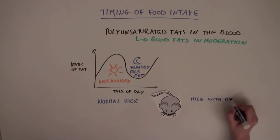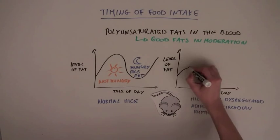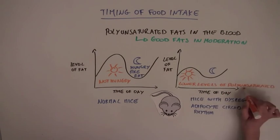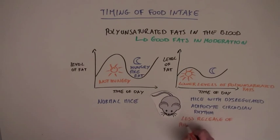The scientists realized that mice with a disrupted adipocyte circadian rhythm had lower blood levels of polyunsaturated fats during the day. This is because these mice were releasing less polyunsaturated fats into the blood, despite consuming the same amounts of fats as normal mice.